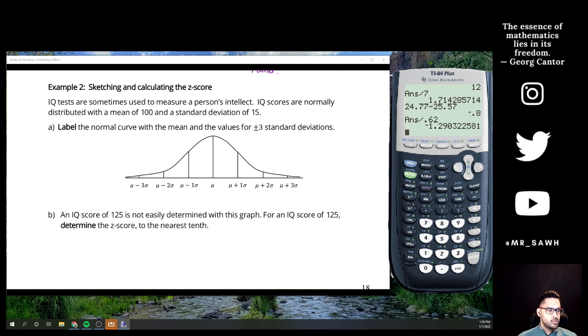Now if we do one, this talks about IQ scores, but really this will illustrate the fact that I could put data and z-scores on the same bell curve, and it really doesn't matter. It just gives us a way to visualize what we mean. This is a standard comparison. So IQ tests sometimes use to measure intellect, normally distributed with a mean of 100 and a standard deviation of 15. So we are going to label this curve with the average and the values for three standard deviations. Basically, this is what we did in the last lesson.